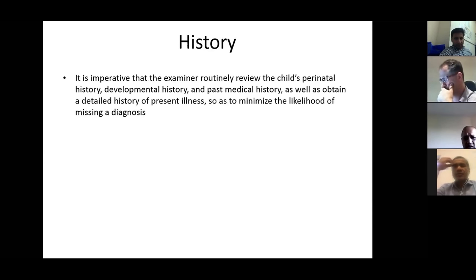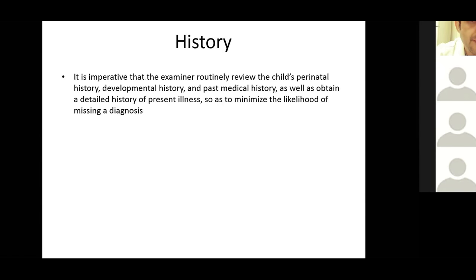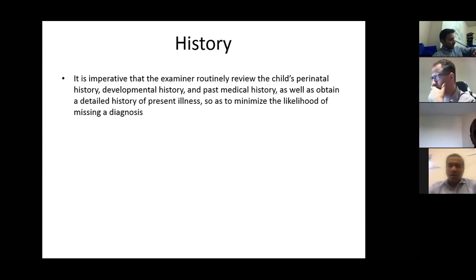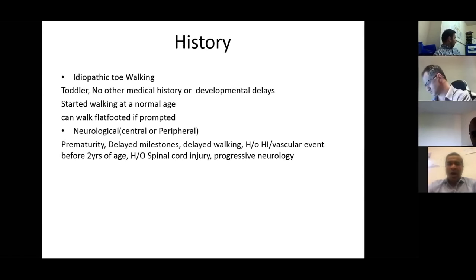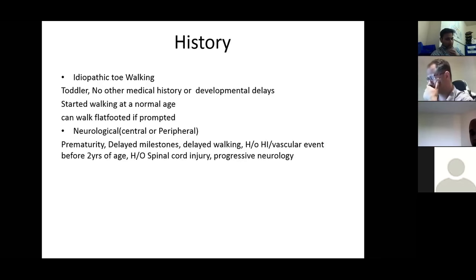When approaching these patients, it is important to take a full perinatal history, developmental history, and past medical history, as well as a detailed history of the presenting illness to minimize missing a diagnosis or neuromuscular condition. Idiopathic toe walking is most likely in a toddler without other medical problems or developmental delay, who started walking at a normal age, walks symmetrically, and can walk flat-footed if prompted.